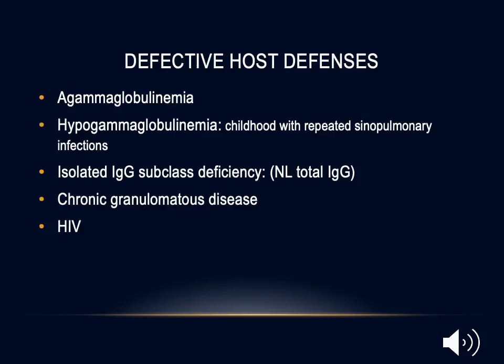Immunoglobulins are produced by plasma cells, which are the result of development and differentiation of B cells. Any factor that impedes B cell lineage development or function of mature B cells may result in reduced serum immunoglobulin levels, as in hypogammaglobulinemia — characterized by repeated sinopulmonary infections during childhood — or nearly absent levels in agammaglobulinemia. Sometimes patients have normal total immunoglobulin with isolated IgG subclass deficiency. Patients with chronic granulomatous disease or HIV will also have defective host defense, leading to recurrent bacterial infections and bronchiectasis.